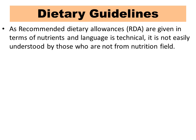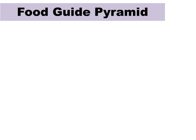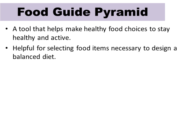RDA values are given in terms of nutrients and the language used is technical. In such cases, there are dietary guidelines published in our country and elsewhere. These guidelines are given by expert groups of various organizations and convey consumption of food on a daily basis rather than in terms of nutrients. These guidelines are shown by food pyramids and food groups. A food guide pyramid is a tool that helps make healthy food choices to stay healthy and active.